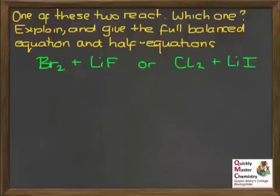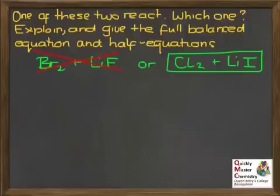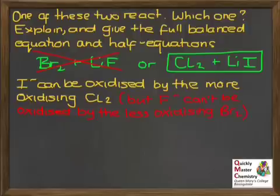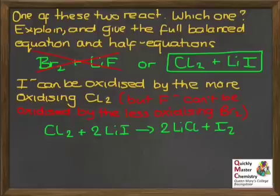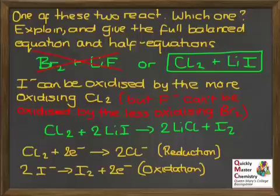The correct combination is chlorine reacting with lithium iodide. Chlorine is more oxidising than iodine, so it can oxidise iodide ions. On the other hand, bromine is less oxidising than fluorine, so it cannot oxidise fluoride ions. The balanced equation for the reaction and the two half equations follow from this reasoning.